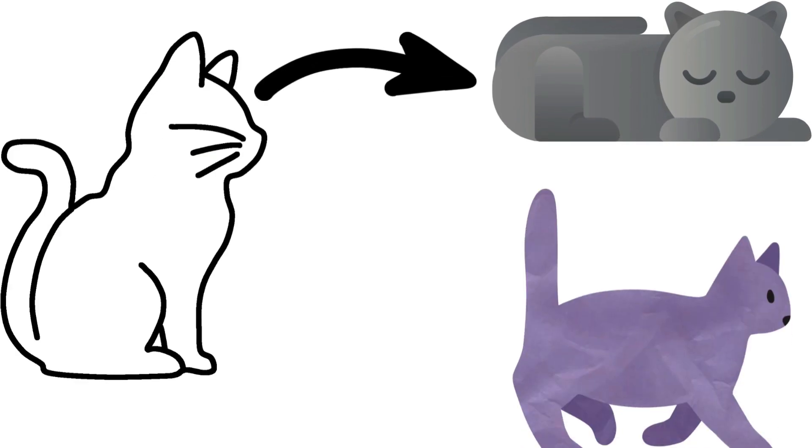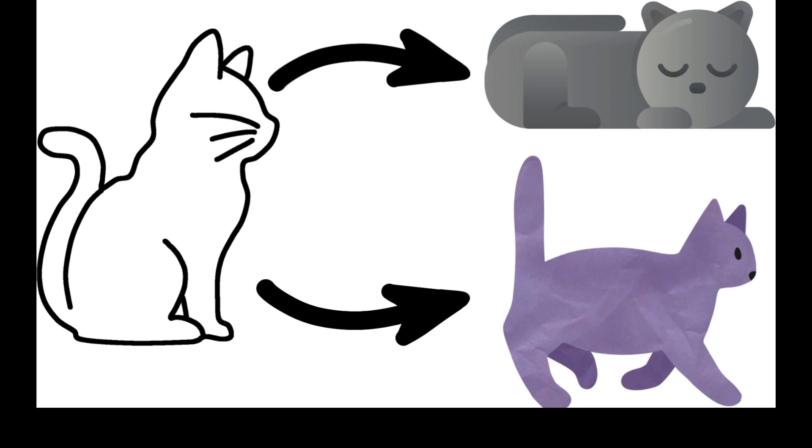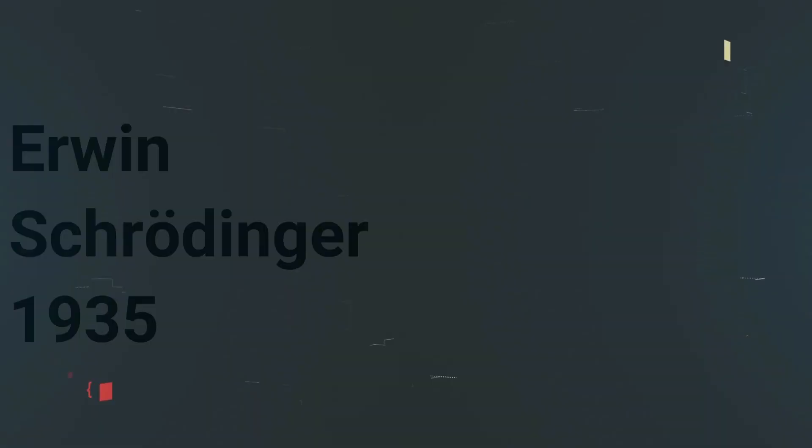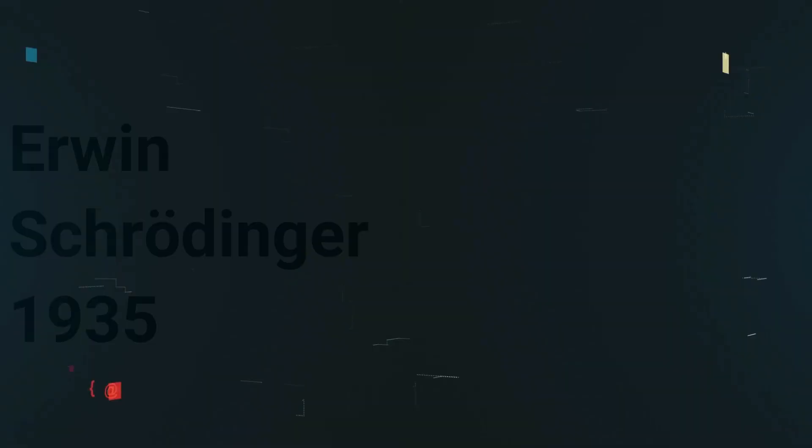Can a cat be simultaneously alive and dead? Let us explore this concept in our video about Schrödinger's cat, a thought experiment proposed by physicist Erwin Schrödinger in 1935 to illustrate the paradoxical nature of quantum mechanics. The experiment challenges